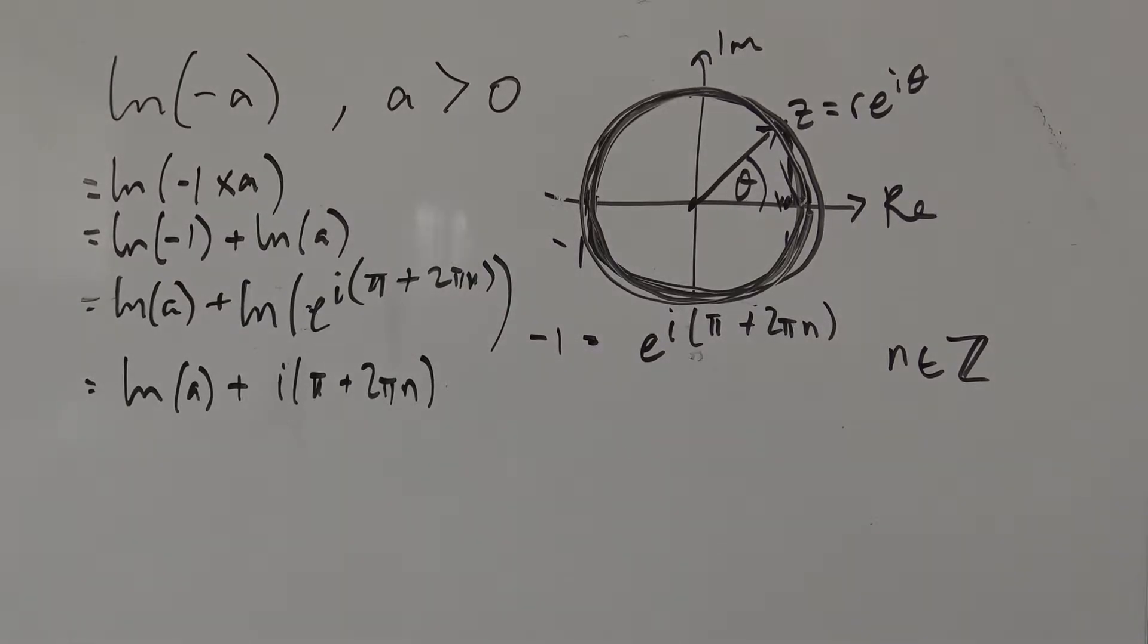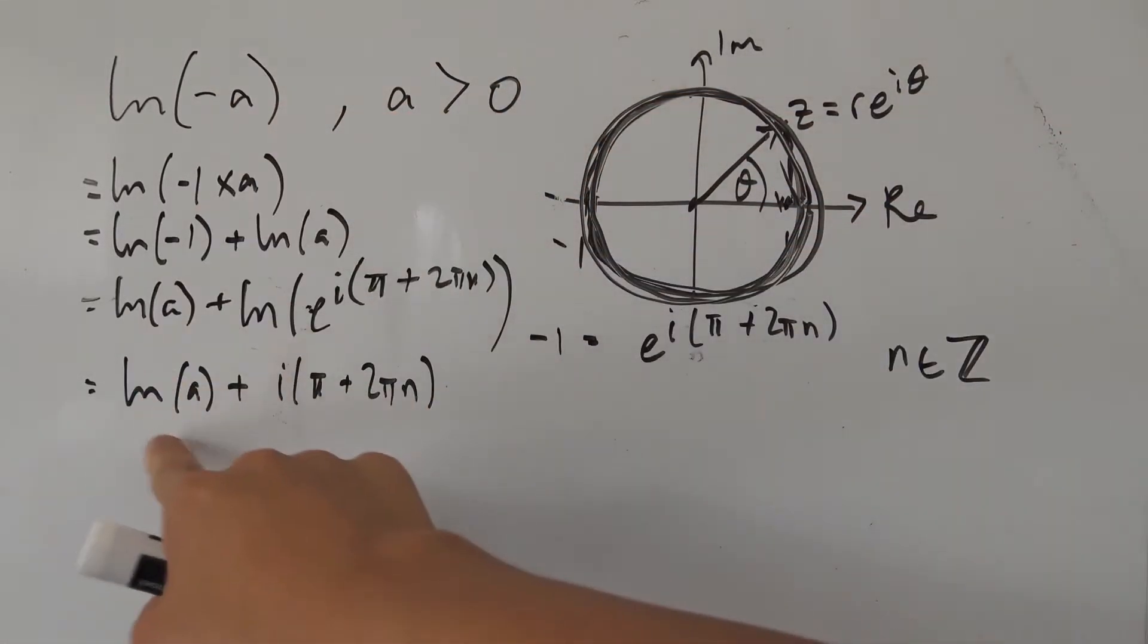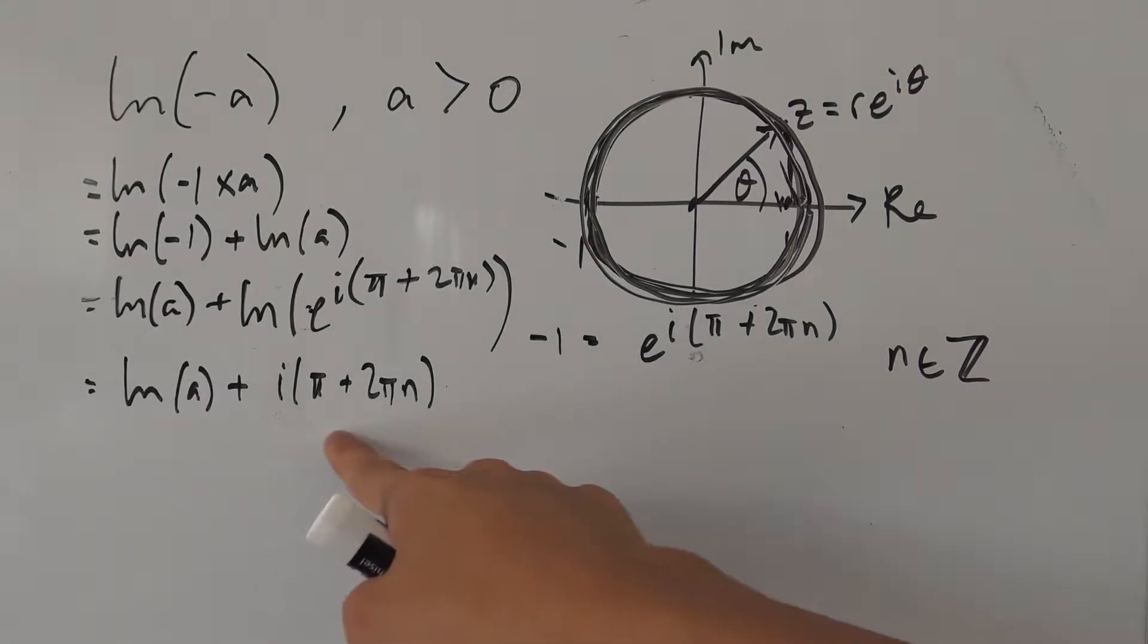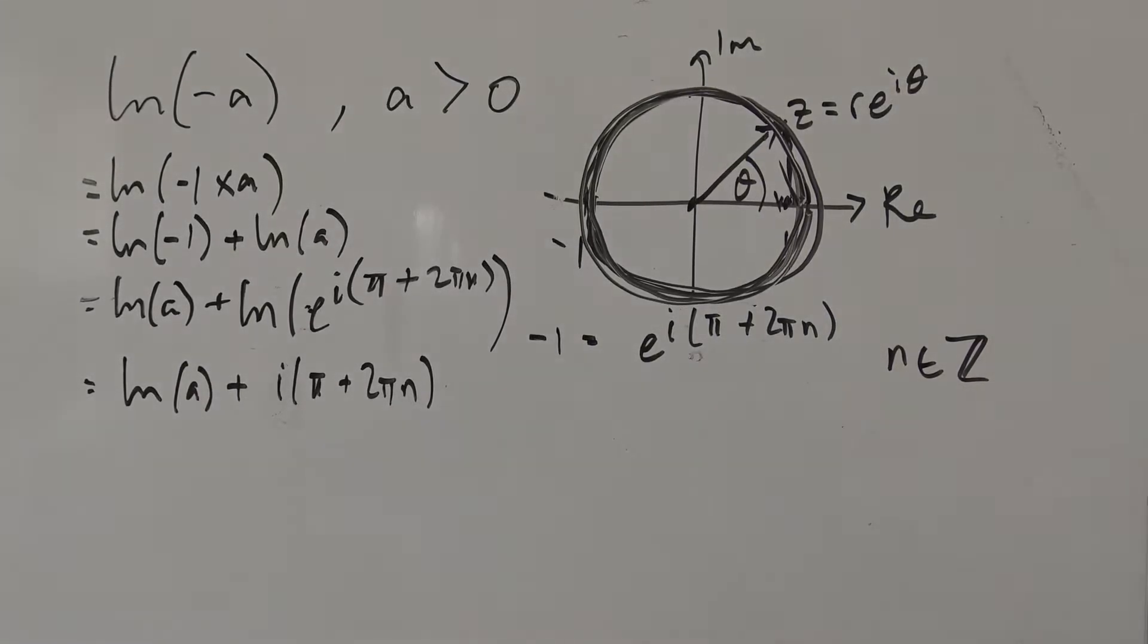And that will leave you with natural log of a plus i times pi plus 2 pi n. And that's pretty much our answer to the natural log of negative a. It's this natural log of a which is our real component plus this imaginary component here pi plus 2 pi n.